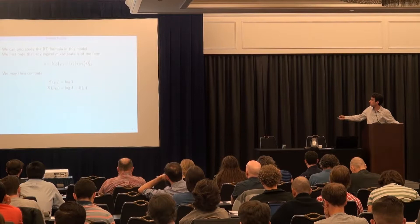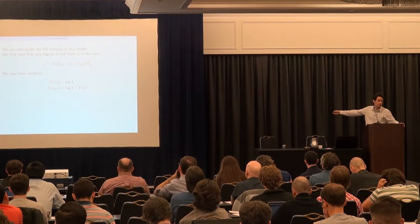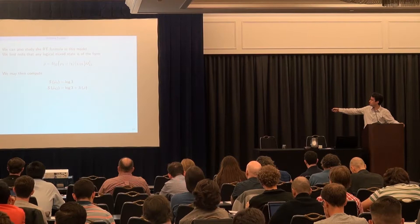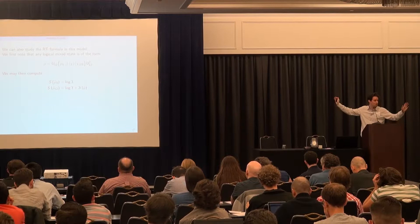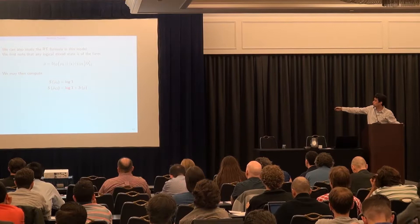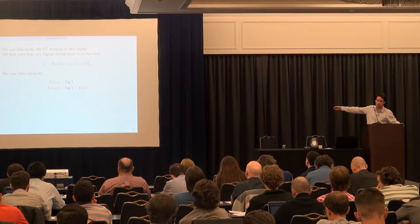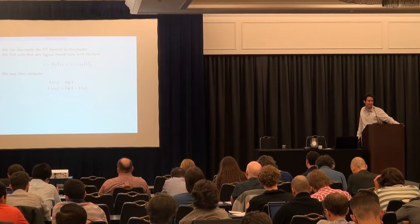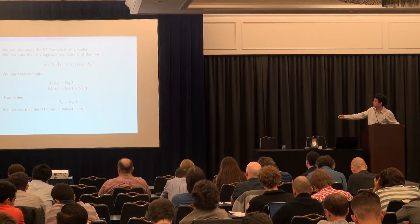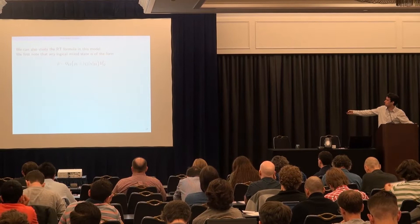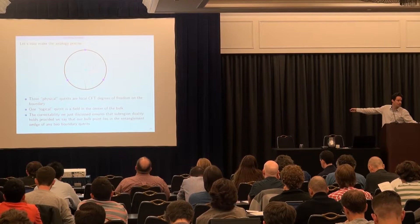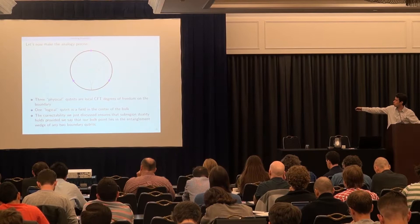To check the Ryu-Takayanagi formula, we compute the entropy on any two qutrits and on any one qutrit. The entropy on qutrit three: tracing out one and two, we forget about the unitaries and get half of chi — since chi was a maximum state, we get log 3. For qutrits one and two: the unitaries drop out, there's another half of chi giving log 3, plus the entropy of the unencoded state. This is precisely the Ryu-Takayanagi formula if we interpret the area operator as log 3.